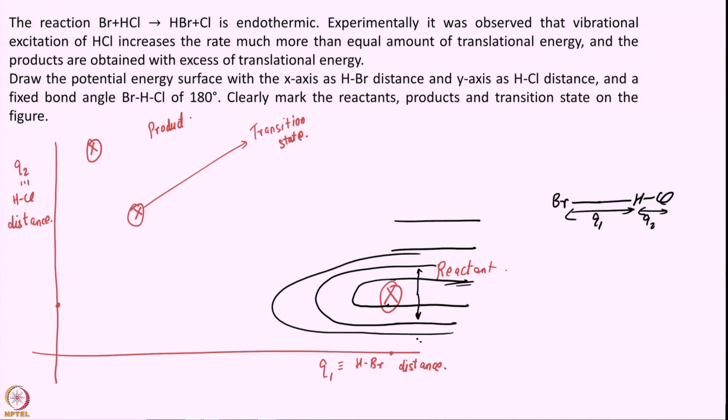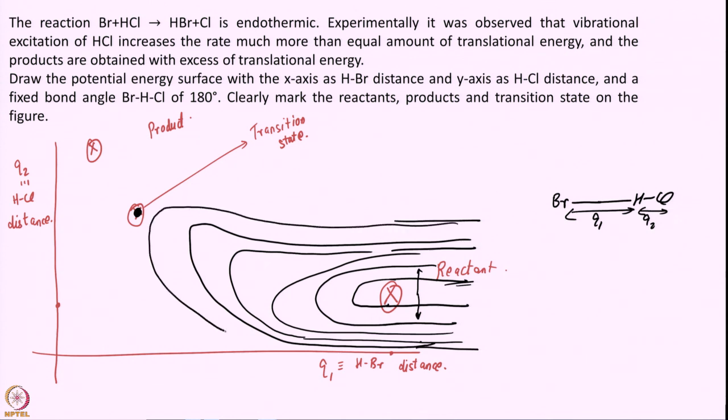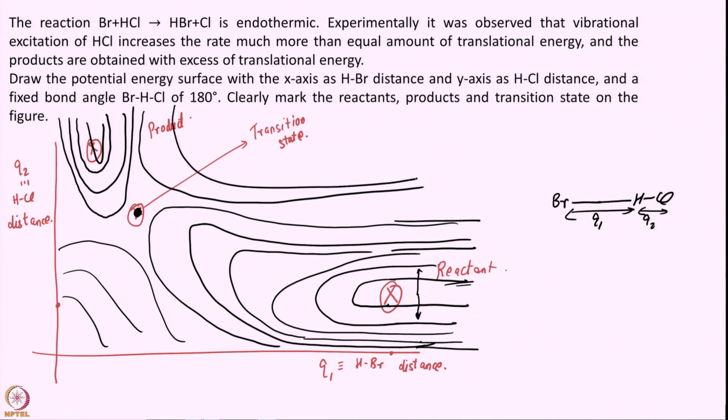Eventually, remember this is my transition state here. So this thing has to curve around like this qualitative figure and the same thing around the product. I will get surfaces that will look like this, the same argument. But the transition state is just sitting closer to the product. So that is your potential energy surface.